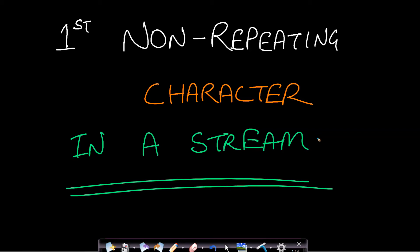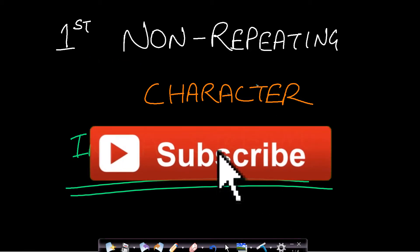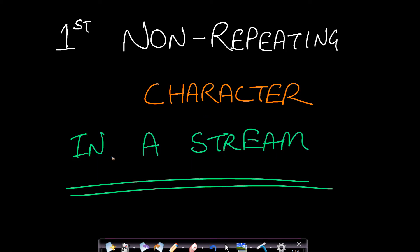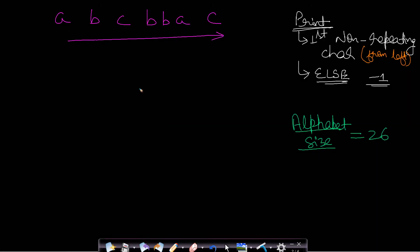Hello guys, welcome back to TechDose. In this video we will see how to find the first non-repeating character in a stream of characters. Let us look at the problem statement. We are given a stream of characters — first we see the first character, and with only that character as our string, the first non-repeating character from the left-hand side is 'a'.